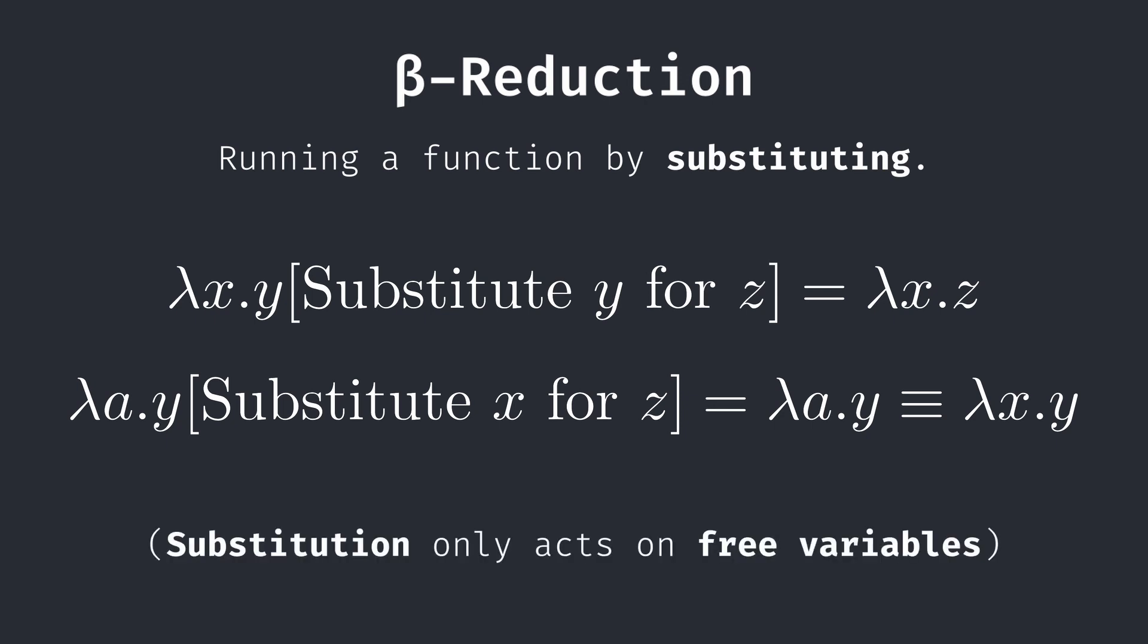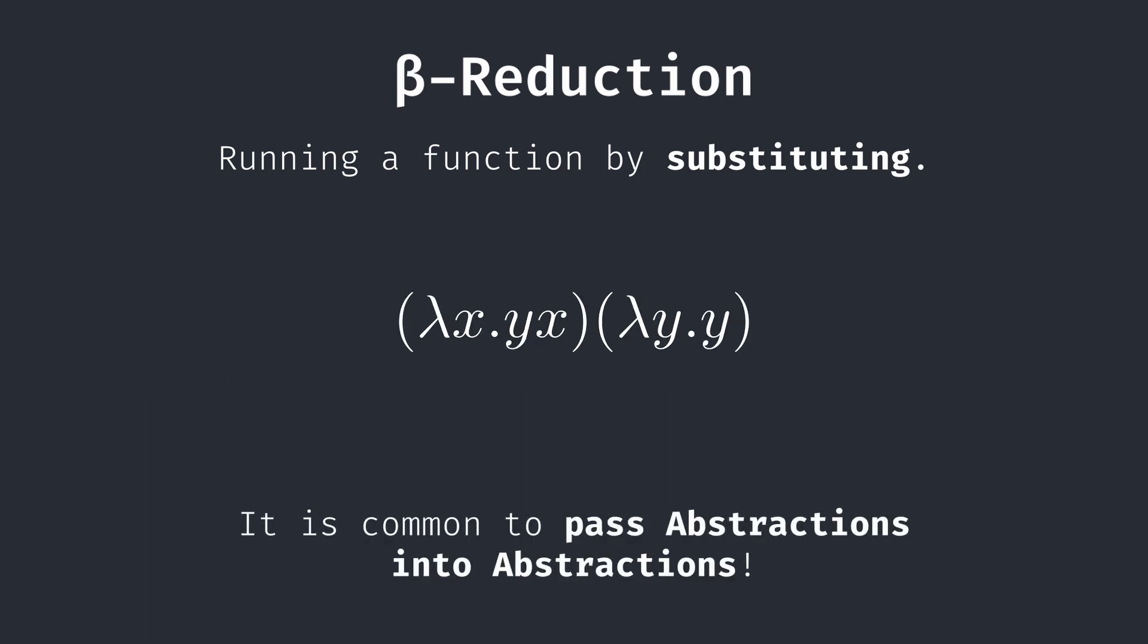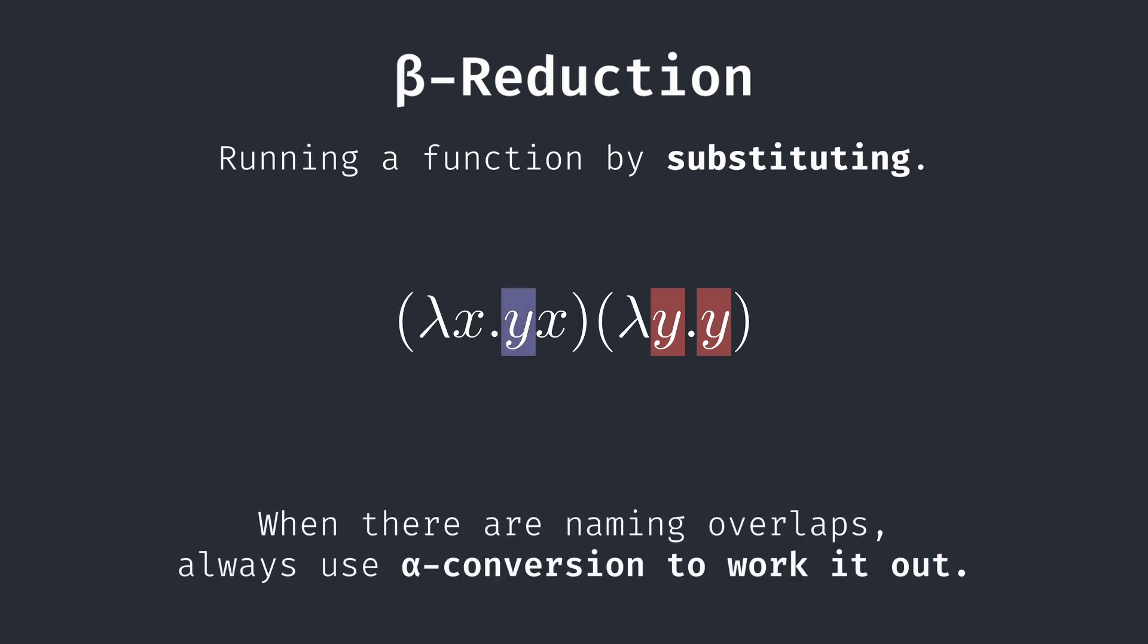Meanwhile, y is unbounded to the abstraction or free in this context. In other words, it actually represents a value. Thus, it is substituted for z. In many cases, we will be passing abstractions as inputs to other abstractions. In order to beta reduce this application, let's first clarify some variables. Notice that the y's in the second expression are bounded and different from the y in the first expression. Alpha conversion can be helpful for clarifying variables in these scenarios. Let's alpha convert the second expression into lambda a a for clarity.